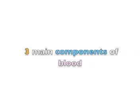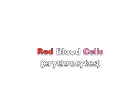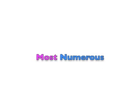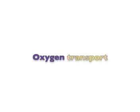There are three main components of blood. They include red blood cells, which are called erythrocytes. Red blood cells are the most numerous of all types, and they help transport oxygen throughout the body. Each red blood cell contains hemoglobin.